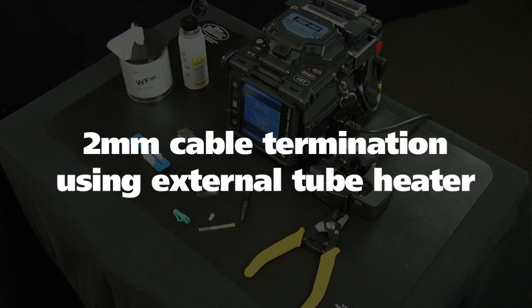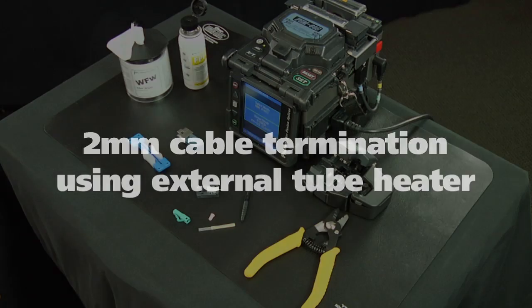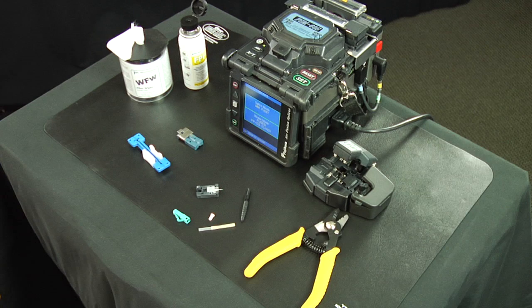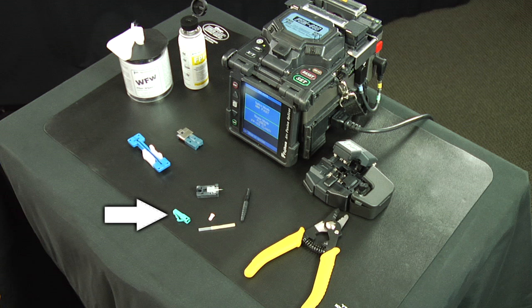Two millimeter cable termination using external tube heater. The components and tools required for installation are the Fuse Connect LC 2 millimeter cable components, a 2 millimeter fiber holder, a 2 millimeter cable clamp, a fiber stripper, and a CT30A cleaver.